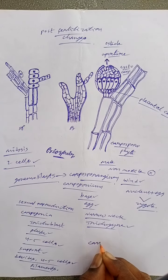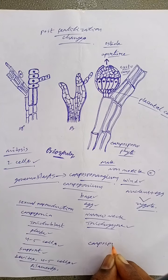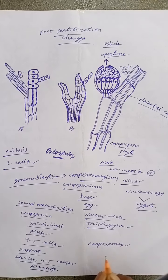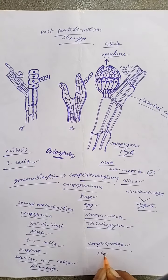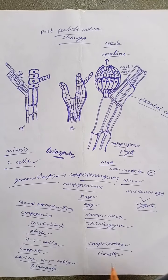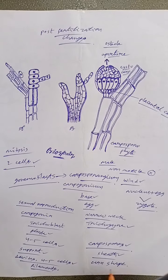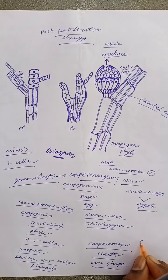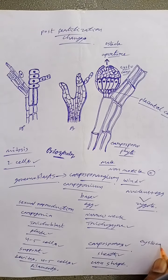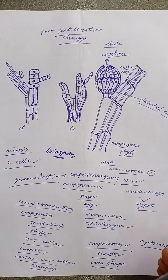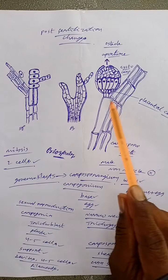The carposporangium along with gonimoblast filaments get enclosed within a sheath of vegetative filaments and form an urn-shaped body called cystocarp or carposporophyte. The opening of cystocarp is called ostiole. Carpospores are liberated through ostiole, carried by water currents.